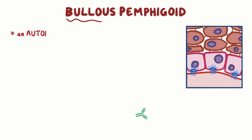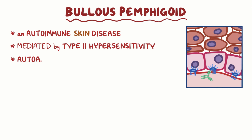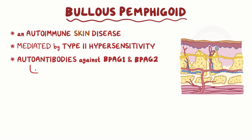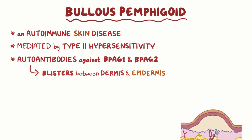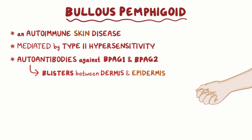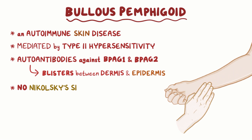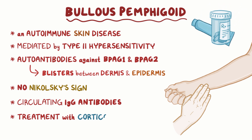As a quick recap: bullous pemphigoid is an autoimmune skin disease mediated by type-2 hypersensitivity. Autoantibodies form against BPAG1 and BPAG2, and they allow blisters to form between the dermis and epidermis layers of the skin. Large, tense blisters on the lower abdomen, arms, and legs are the most common symptom. There is no Nikolsky sign, but there are circulating IgG antibodies, and this condition is usually treated with corticosteroids.